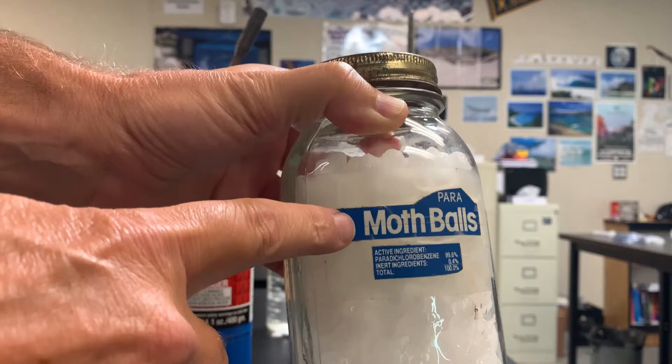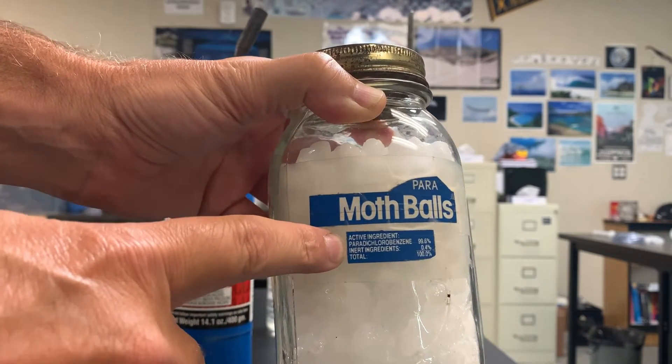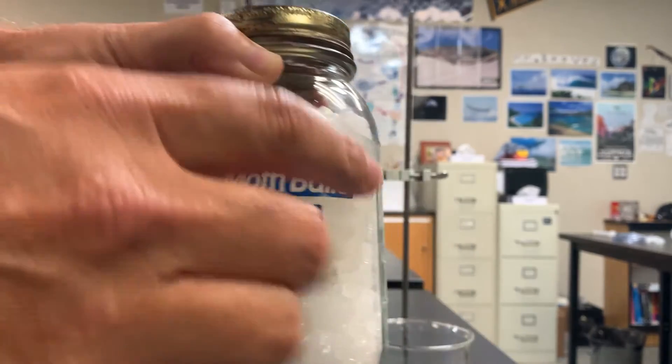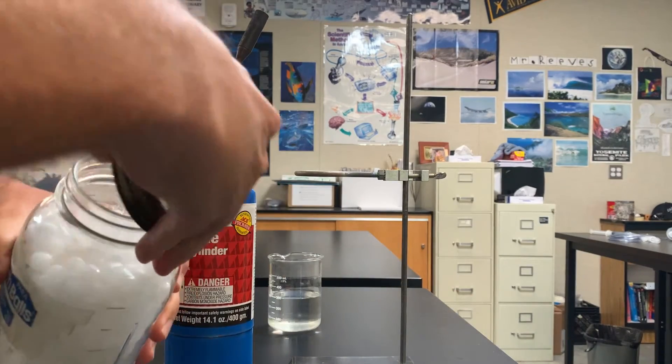So the chemical in this mothball is called paradichlorobenzene. Try saying that three times. Paradichlorobenzene. And right now it's a solid. I'm going to pour some out into this beaker.